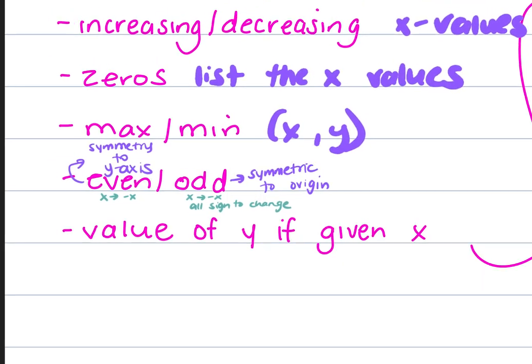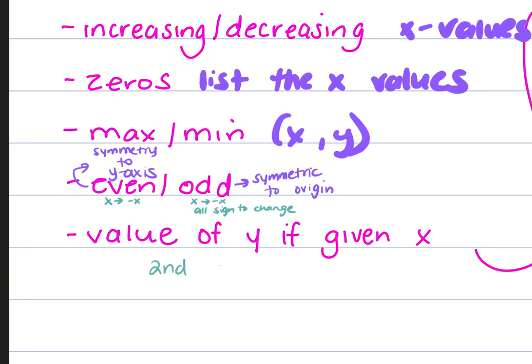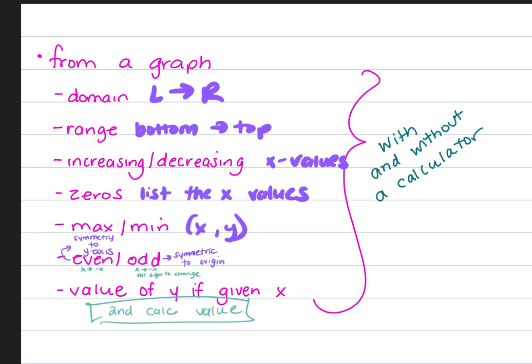And then our value of y given x, this is where you're going to use your value menu. So second calc, and then you go to value. That menu, second calc is basically where you're going to do all those things. Max, min, zeros, and value. Questions on any of that stuff? So you'd need to know how to do it with a calculator. Like here's the graph, here's an equation graph that answer the questions. But then also if I gave you a picture, you'd have to be able to do that same stuff.